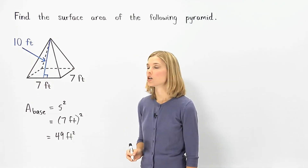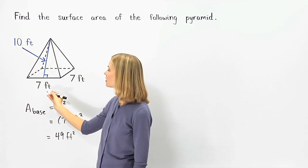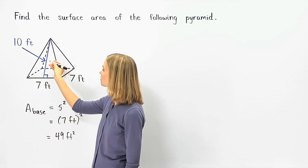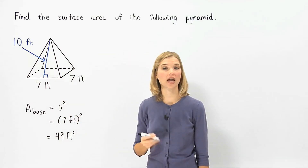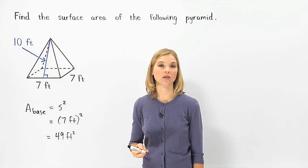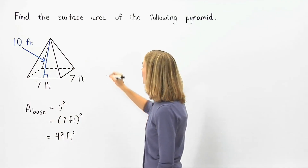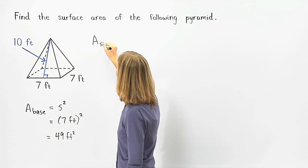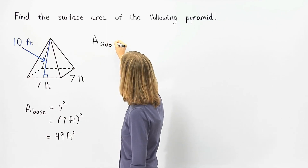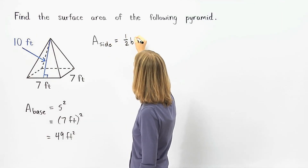Next, notice that there are 4 sides of the pyramid, and each side is a triangle with a base of 7 feet and a height of 10 feet. Remember that the formula for the area of a triangle is 1 half base times height, so the formula for the area of each side of the pyramid is 1 half base times height.